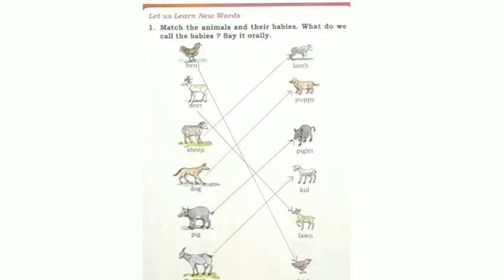Children, let us learn new words. Match the animals and their babies. What do we call the babies? Say it orally. The baby of hen is chick, and deer is fawn, sheep is lamb, dog is puppy. The baby of pig is piglet. The baby of goat is kid.